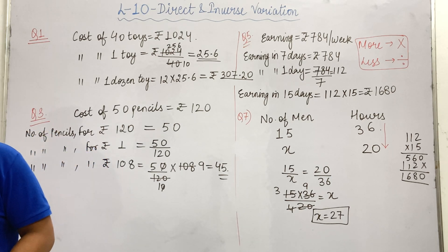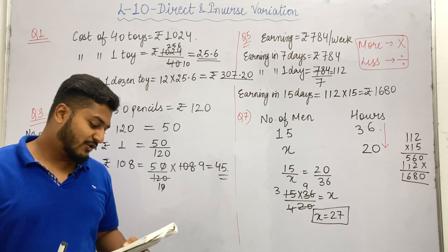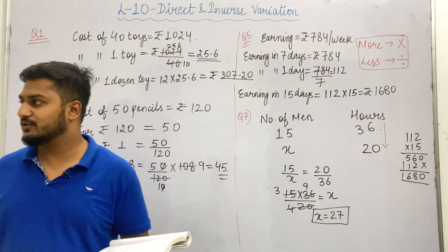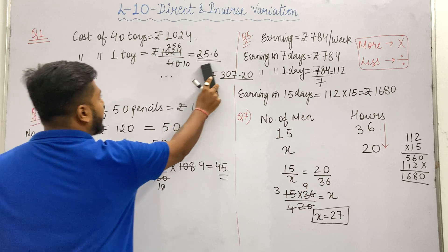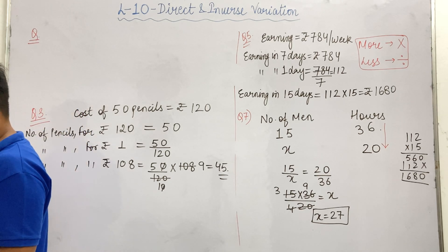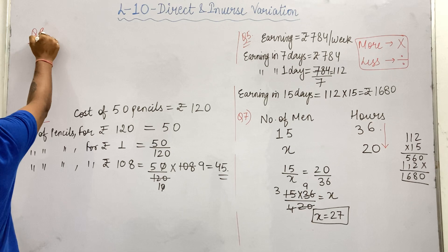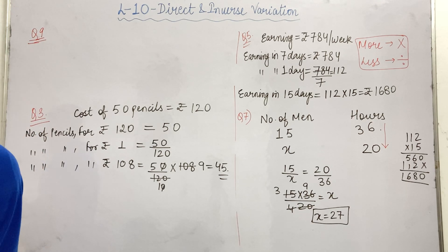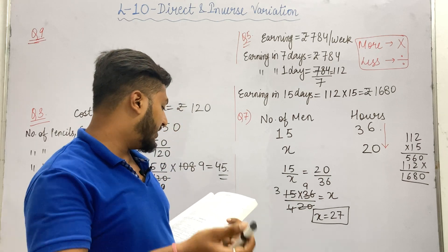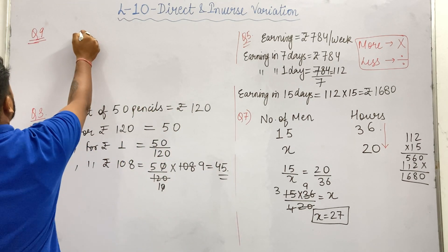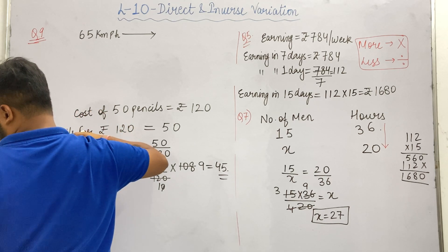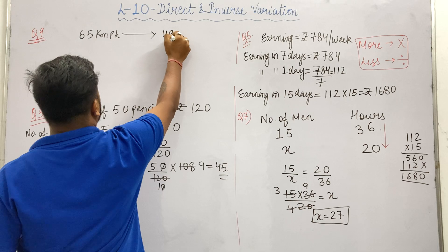After this we come to question number 9, which is the last question I will complete in this video. There are only 15 questions in this exercise. So question number 9: a journey by car takes 48 minutes at 65 km per hour. How fast must the car go to finish the journey in 40 minutes? Please pause the video and note down this question. Here, when the car travels at 65 km/h, the time taken to cover the journey is 48 minutes.